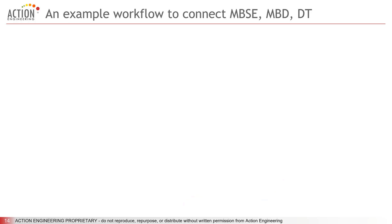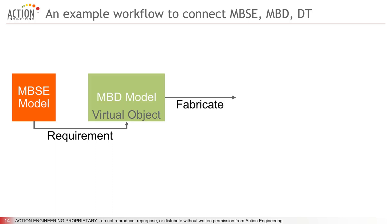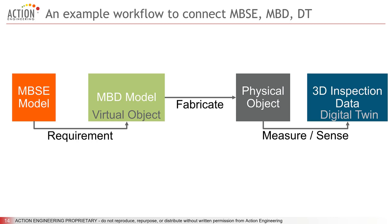I'll walk you through a high-level workflow for connecting MBSE, MBD, and the digital twin together. The systems engineer begins by modeling a system and creates requirements for engineering. The design engineer creates an MBD model. The producer fabricates the part and creates the physical object. The inspector measures the physical part, thereby creating the first digital twin, and then feeds back the digital twin data to engineering to compare with the MBD model.